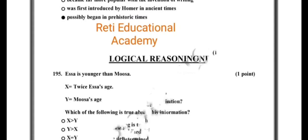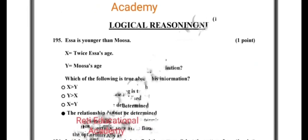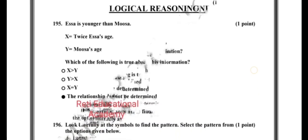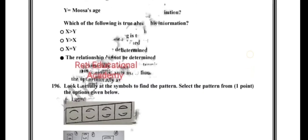Question number 195: Isa is younger than Musa. Which of the following is true about this information? The relationship cannot be determined.